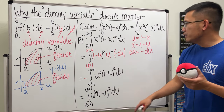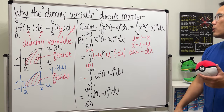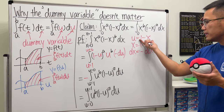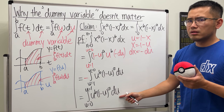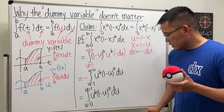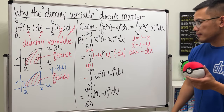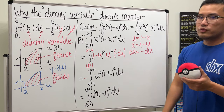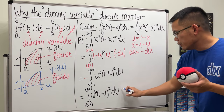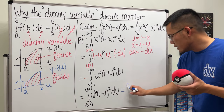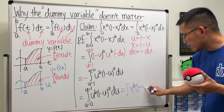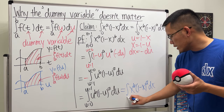The result looks almost the same as the right-hand side, except we have u's instead of x's. You might think we should substitute 1 minus x back in — but that's not what we do here. This is exactly why we discussed the dummy variable earlier. We can just change all the u's to x's, giving us the integral from 0 to 1 of x to the b times (1 minus x) to the a dx.